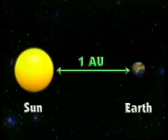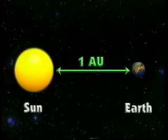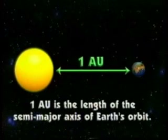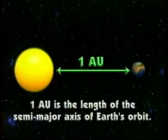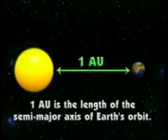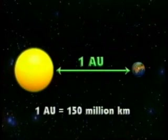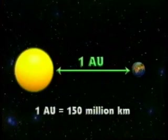The Earth's distance from the sun is 1 AU. If you remember, an AU is the length of the semi-major axis of the Earth's orbit. 1 AU is equal to about 150 million kilometers.